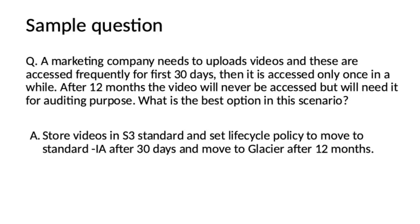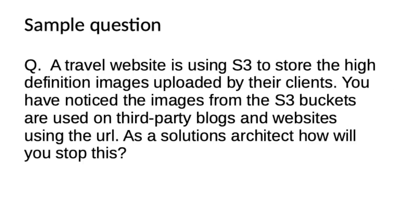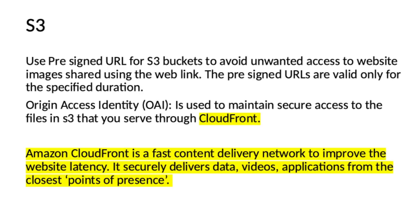Another question: A travel website is using S3 to store high definition images uploaded by clients. You have noticed the images from the S3 buckets are used on third-party blogs and websites using the URL. As a solution architect, how will you stop this? In S3, there is an option to use pre-signed URLs to avoid unwanted access to website images shared using a web link. The pre-signed URLs are valid only for a specific duration. In the actual examination, you can expect a question with a similar sort of idea. Another thing is Origin Access Identity, OAI, which is used to maintain secure access to files in S3 that you serve through CloudFront.